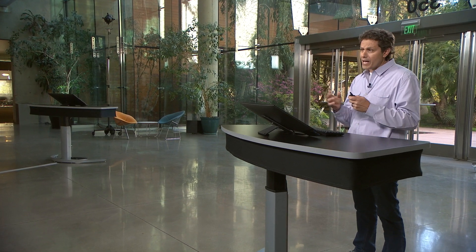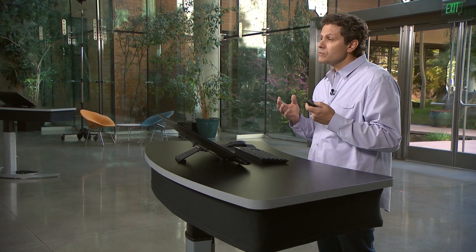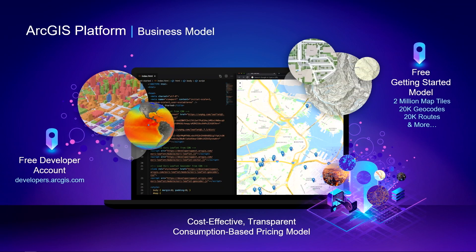So whether you're using the basemaps, the powerful visualization, the data hosting, or the spatial analytics, you'll be able to use our location services whether you're online or offline, indoors or outdoors. The third element of ArcGIS Platform is the business model. Getting started is as easy as creating a free developer account on the developer site. You'll receive a generous free tier to kickstart your development that includes 2 million map tiles and thousands of other service transactions that you could use against searching, routing, or geocoding. You'll find our consumption-based business model transparent and easy to understand, and you'll only pay for what you use regardless of the API you're developing with or the authentication method you choose.